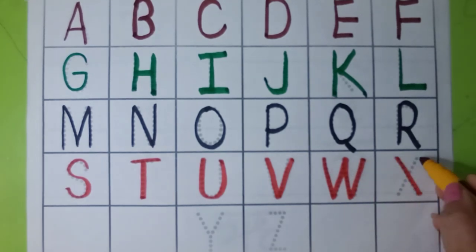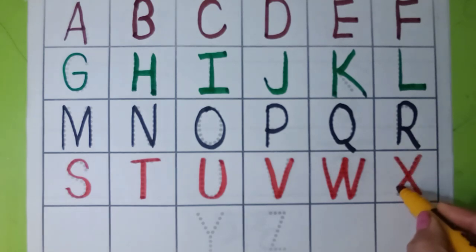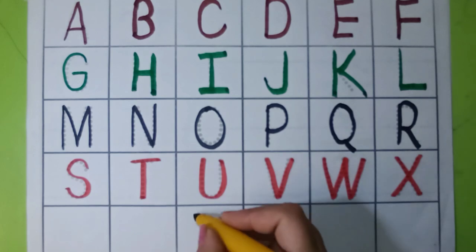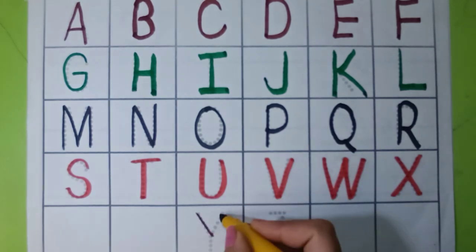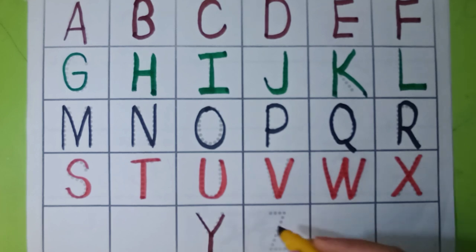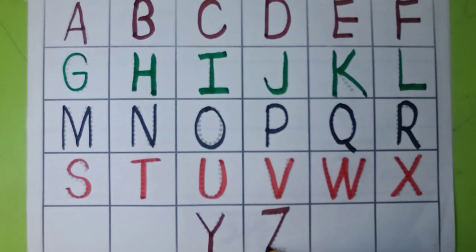X, X for X mastery, X for X mastery. Brown color. Y, Y for yacht, Y for yacht. Z, Z for zebra, Z for zebra.